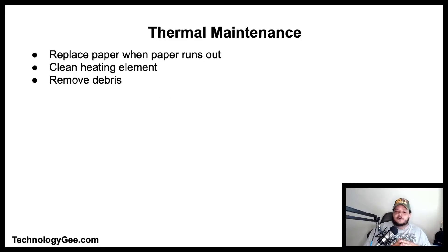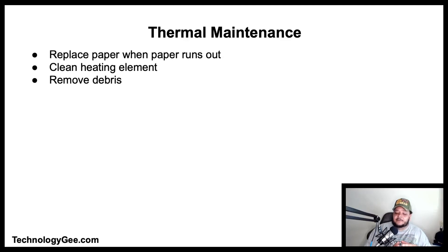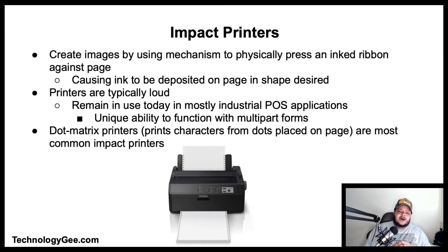For thermal printer maintenance: replace the paper when it runs out. Clean the heating element — many vendors recommend cleaning the print head after each roll of thermal transfer ribbon, and isopropyl alcohol can be used to clean the print heads. Remove debris using cleaning materials recommended by the manufacturer to clear torn paper, solid ink flakes, or label coatings that can build up on rollers and the print head.